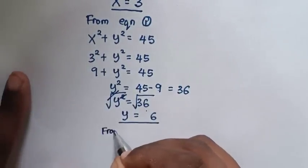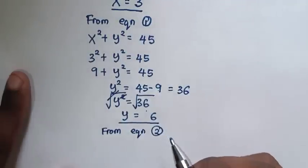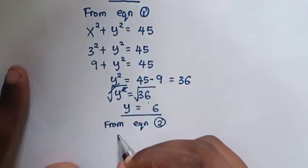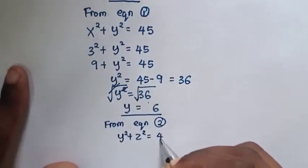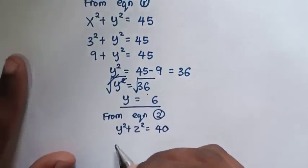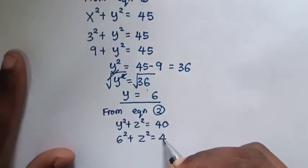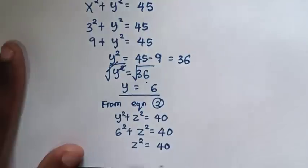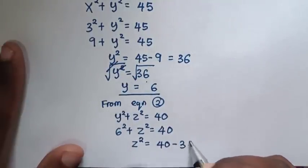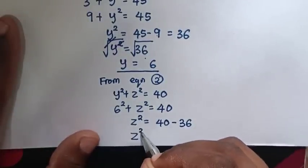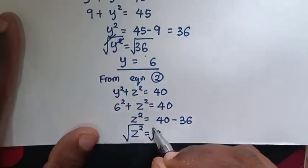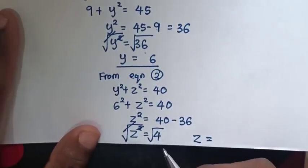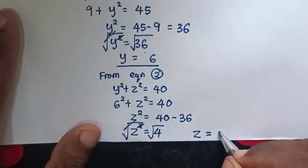Then, to find the value of z, we use equation 2, which is y squared plus z squared is equal to 40. We substitute the value of y, which is 6. So here it will be 6 squared plus z squared is equal to 40. Then, z squared is equal to 40 minus 6 squared. 6 squared is 36, so z squared is equal to 40 minus 36, which is 4. We apply square root to both sides, giving z is equal to plus or minus 2. But since z is a positive integer, the value of z is 2.